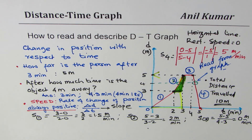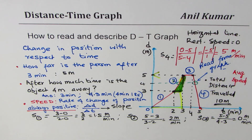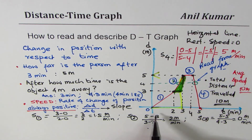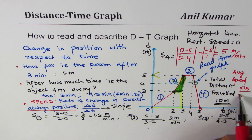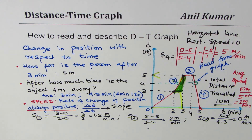Final question: what is the average speed? Average speed equals total distance divided by total time. Total distance is 10 meters, total time is 5 minutes, so average speed = 10/5 = 2 meters per minute.